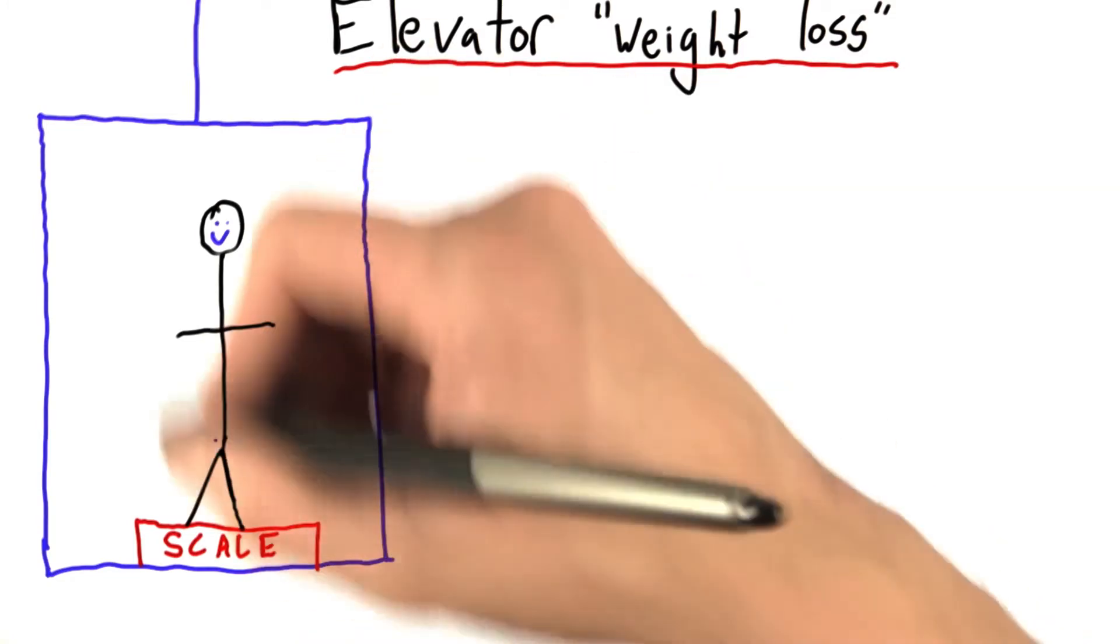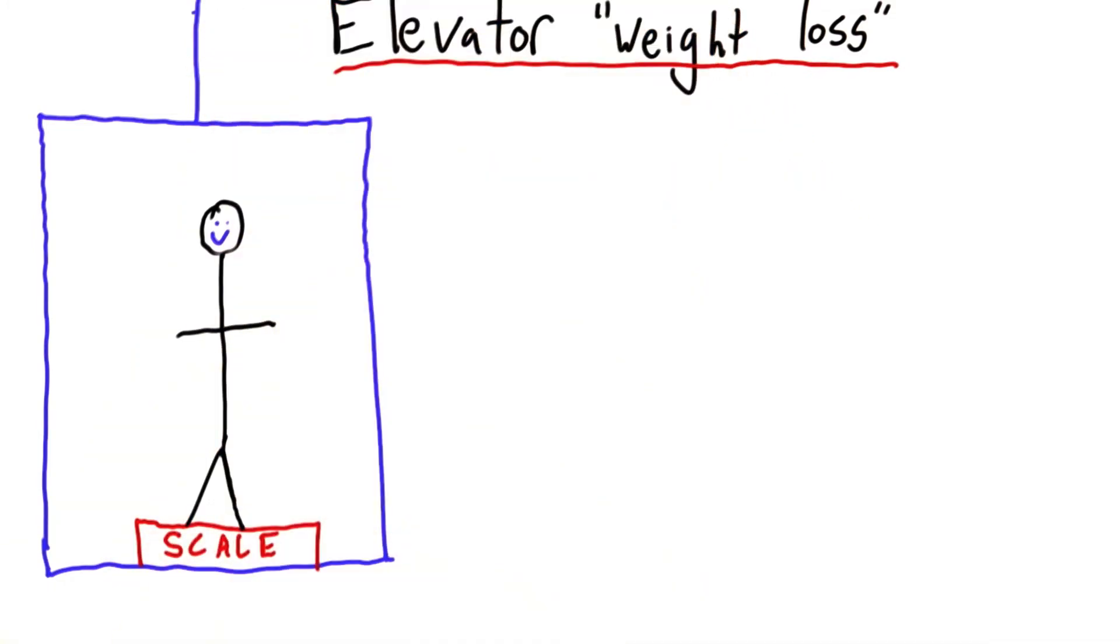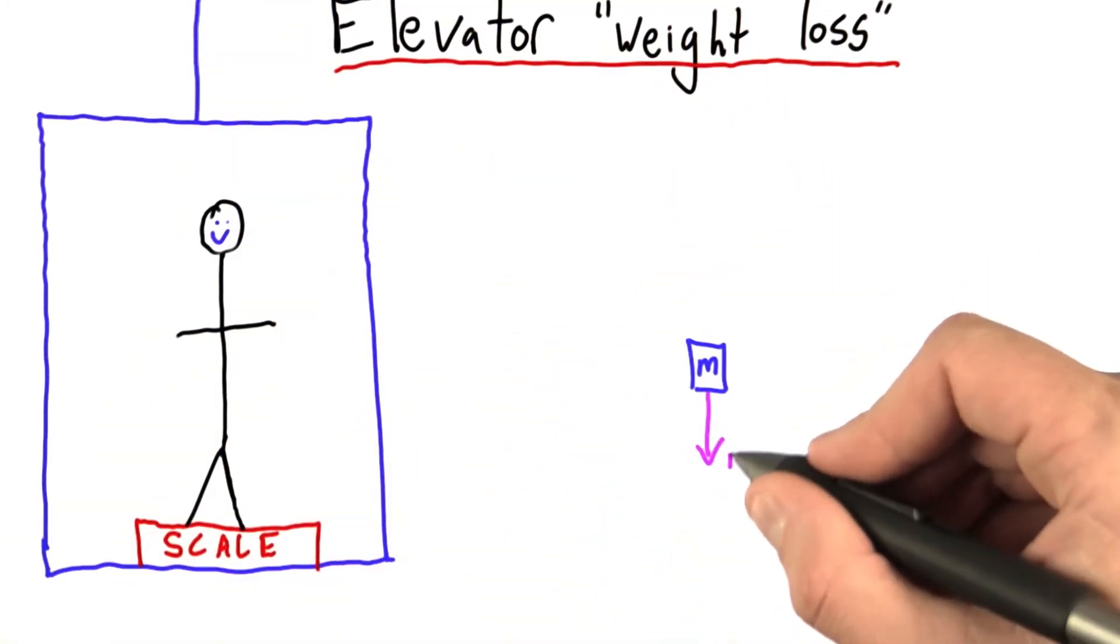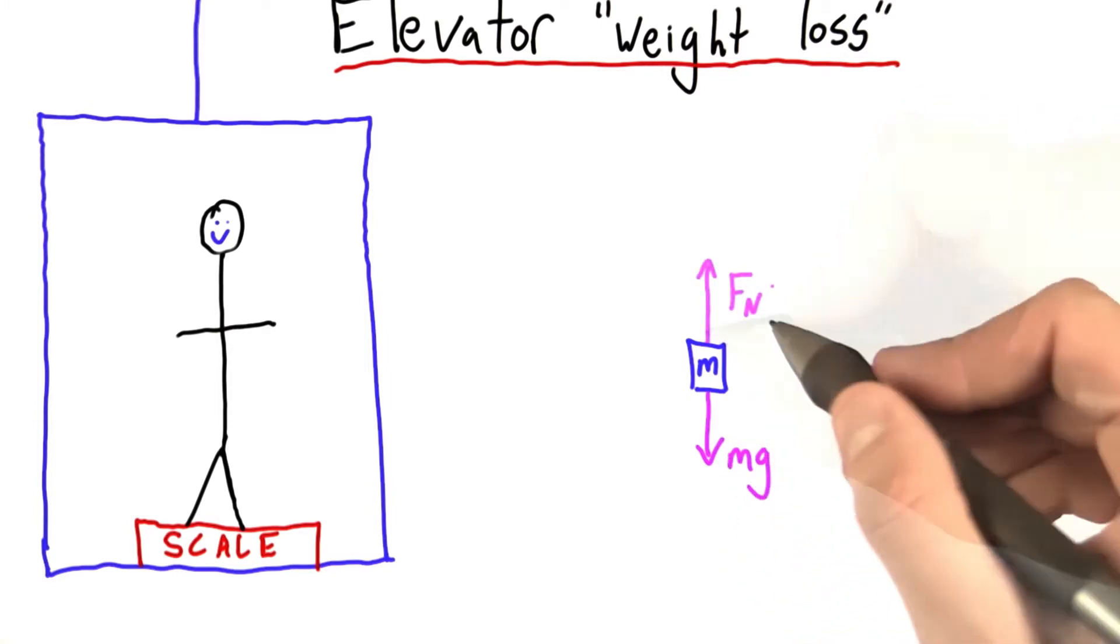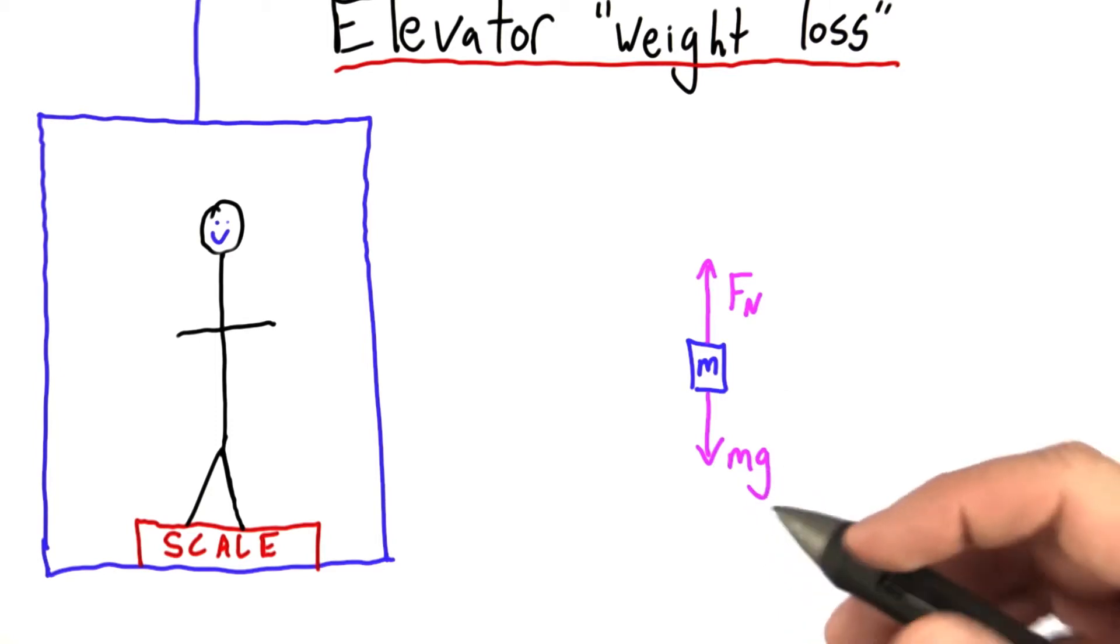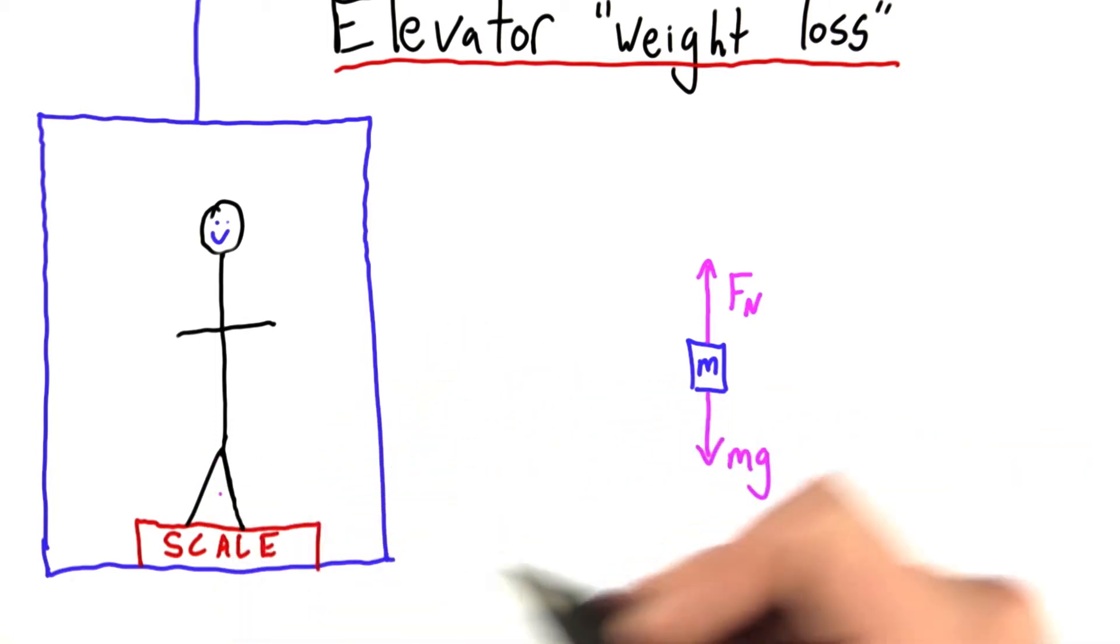As a quick reminder, let's talk about the forces acting on this man when the elevator is completely still. We can represent him as a box of mass m. Gravity is pulling down with the strength equal to mg, and the normal force is pushing up with the exact same strength because he's motionless. There's no acceleration.